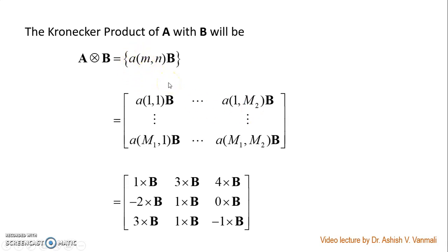The Kronecker product of A with B is defined as A(M,N) into matrix B. If we expand this, we will get this as A(1,1) into B, A(1,2) into B, so on up to A(1,M2) into B. Similarly, as we expand for the different rows, it will become A(M1,1) into B, A(M1,M2) into B and so on.